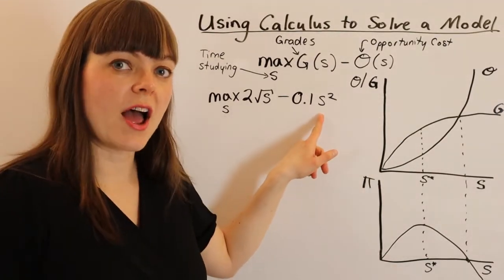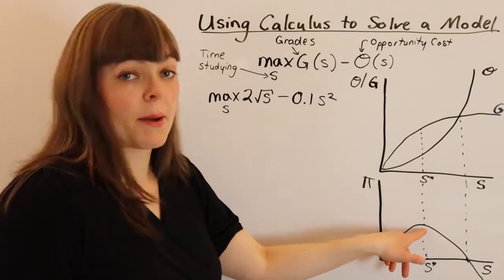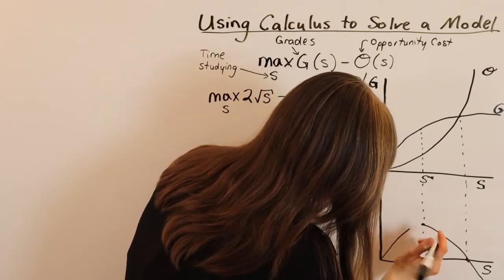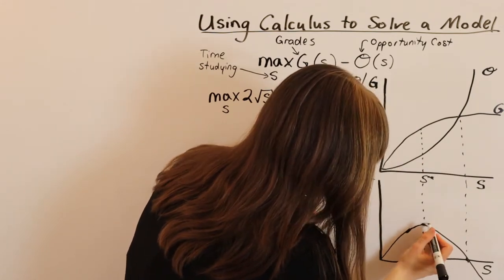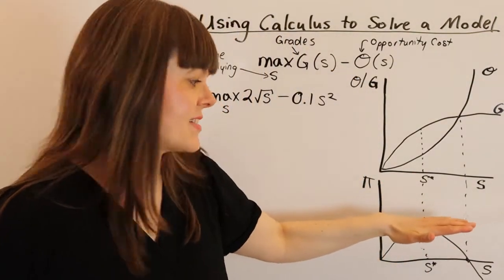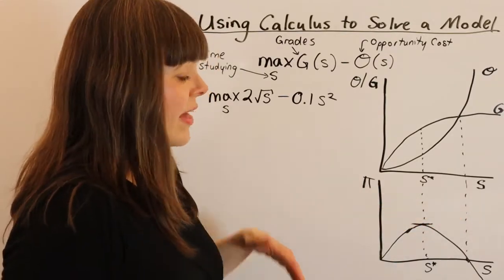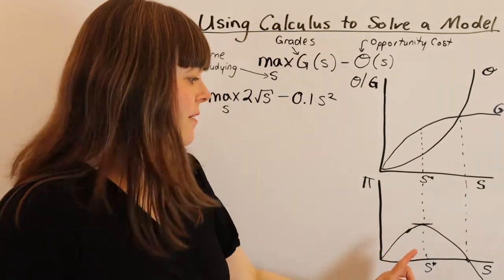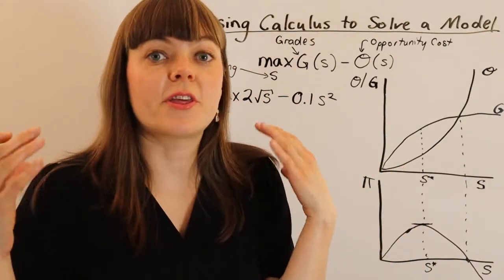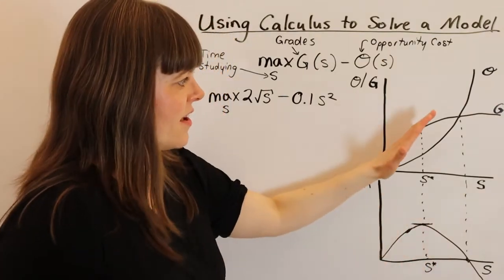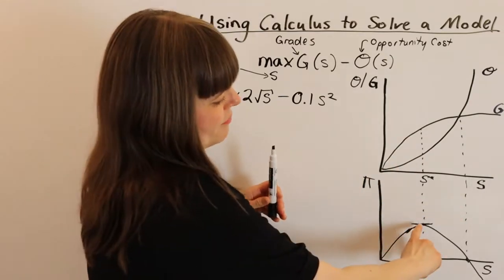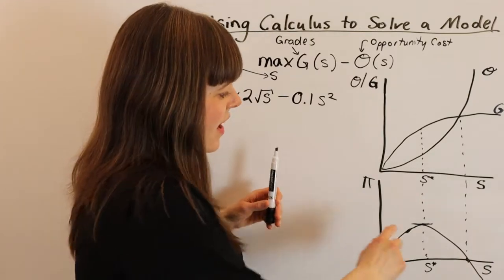How do we find the exact value for s, for time spent studying, that optimizes our objective function? We want to reach the top point, and we notice that at the very top point, the tangent there is exactly equal to 0 - the slope of that tangent is equal to 0. When you hear tangent, you should also be thinking marginal, because the tangent represents marginal benefit and marginal cost. This is the marginal total payoff down here, and you want that to equal 0.